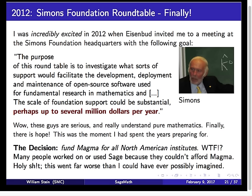We had the meeting, and the decision — the way in which they decided to spend several million dollars a year funding open source math software — was to fund MAGMA for all North American academic institutions, as mentioned earlier. This cost $90,000 per year, and it was the worst possible outcome I could have imagined. MAGMA is closed source, and a lot of the motivation for people who worked on SAGE in America was lack of access to MAGMA. People would find MAGMA was expensive, then they'd find SAGE, write something they needed in SAGE, and contribute it. I explained this all to David, but he said it was already decided. So I was frustrated.